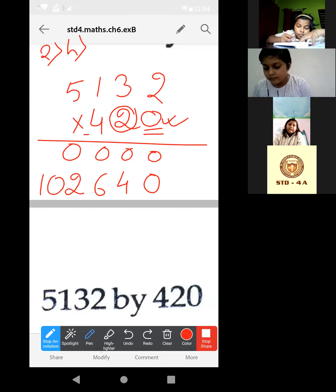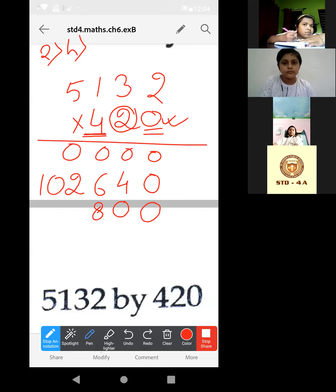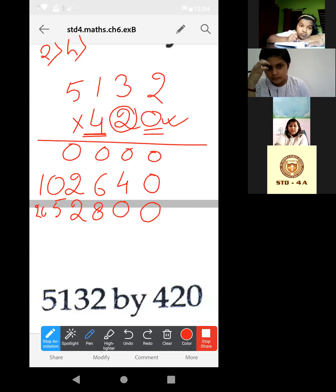Next, by this 4 we have to multiply. That means it is in 100 place. 1 space, 10 space, digit will be 0. Basically, by 400 we are multiplied. That's why these 2 places will be 0. Now, 4 times 2 is 8, 4 times 3 is 12, carry 1, 4 times 1 is 4, plus 1 is 5, 4 times 5 is 20.